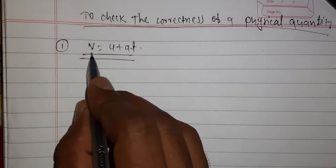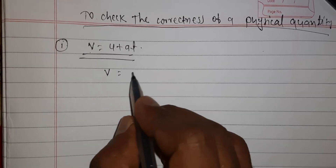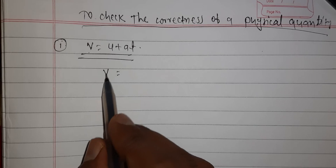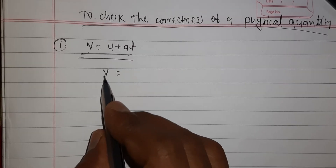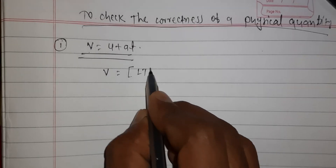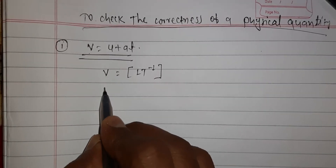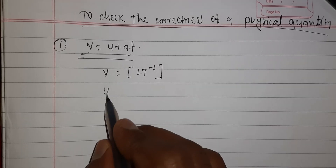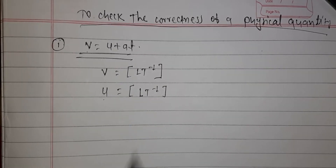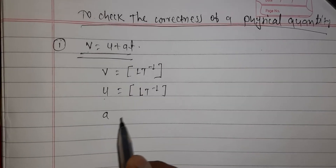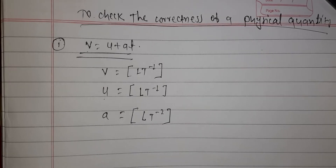In this equation, v is given — v represents velocity. We have already studied the dimensional formula of velocity, so the dimensional formula of velocity is LT⁻¹. Next, u also represents velocity, so its dimensional formula also becomes LT⁻¹. Then we have to see that a represents acceleration, so the dimensional formula of acceleration is LT⁻².